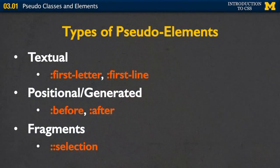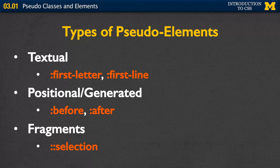Pseudo elements aren't necessarily part of the DOM, but they can be used to style specific or unique parts of the page. For example, if you have a paragraph and you want to put in that fancy first letter in a different font, you can use the first letter pseudo element. Same with first line. You can generate things to show up before or after elements. A lot of times if you're styling something like credit card information, you can put in the different types of credit cards and have a little before that puts a picture in. You can also style just fragments of different selections.